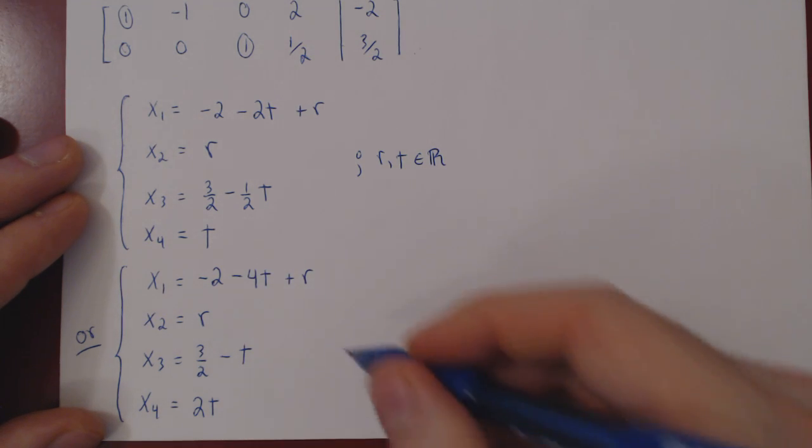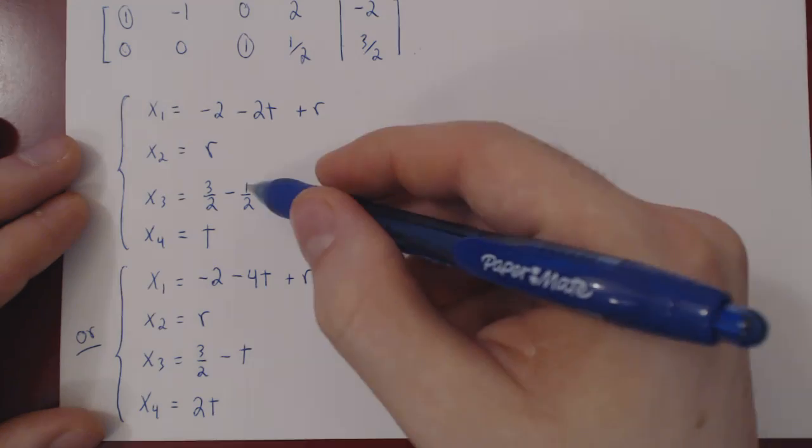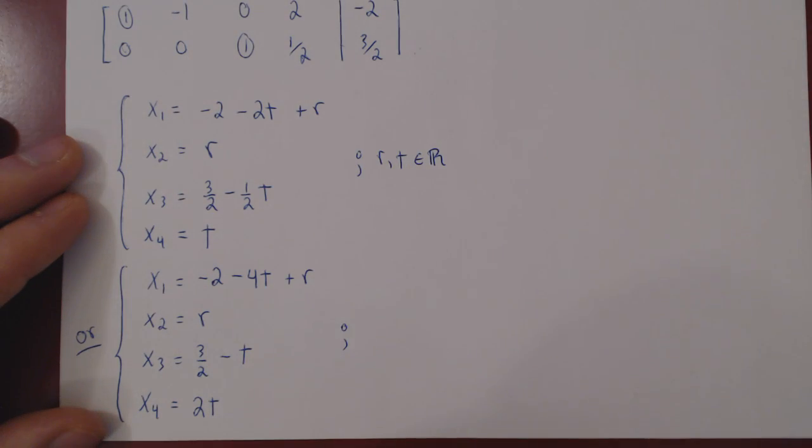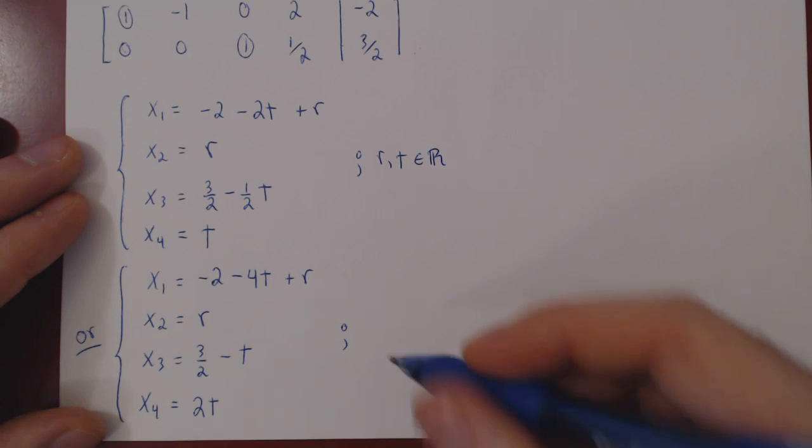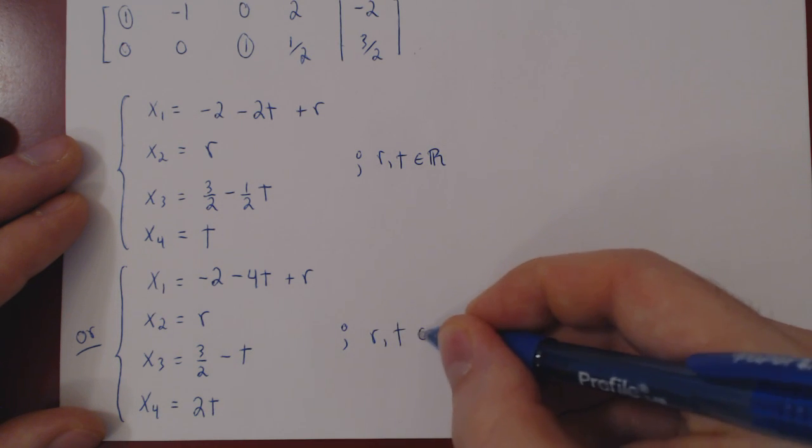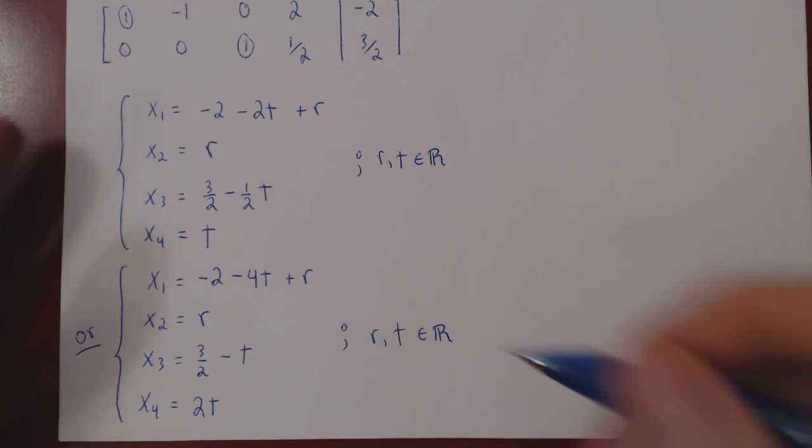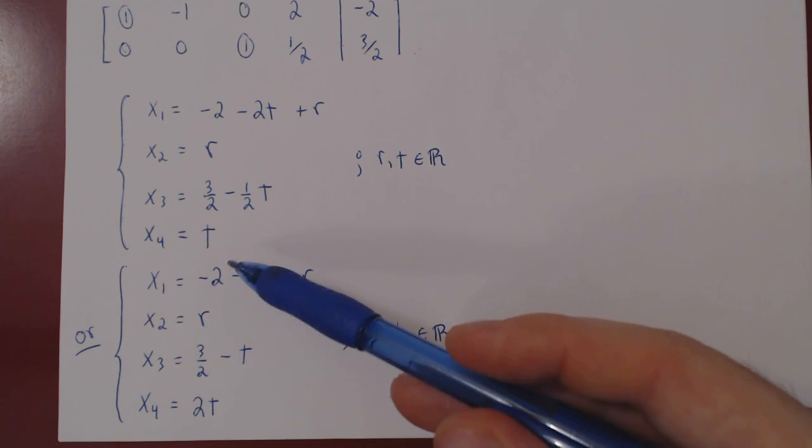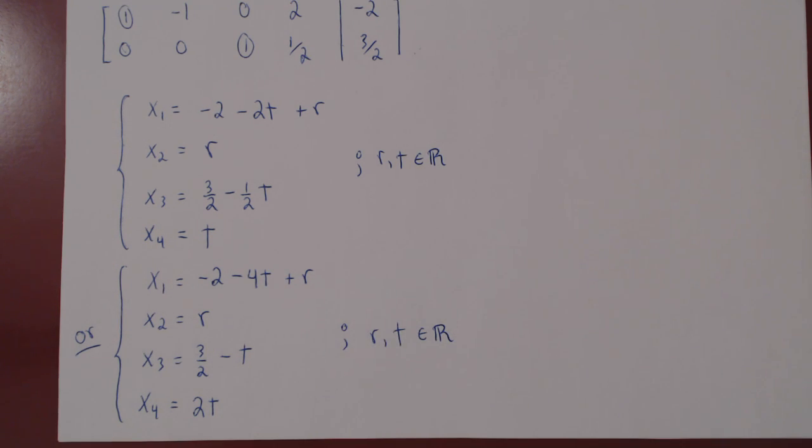Having replaced t by 2t, we kill off this fraction. And again, we state that r and t can take on any real value. And that's it. Here's our solution set in the best possible form.